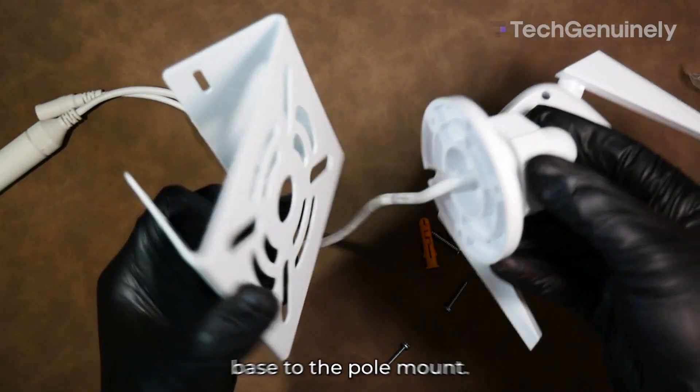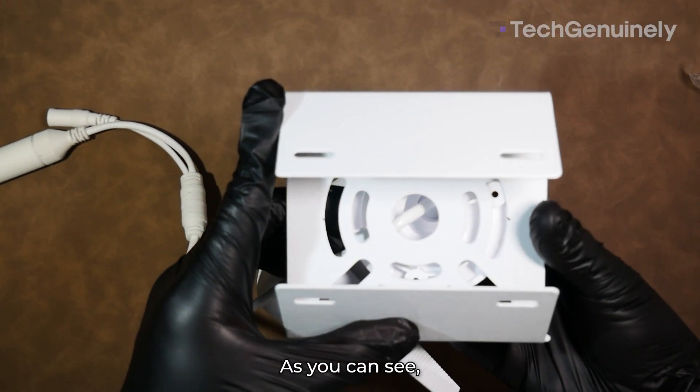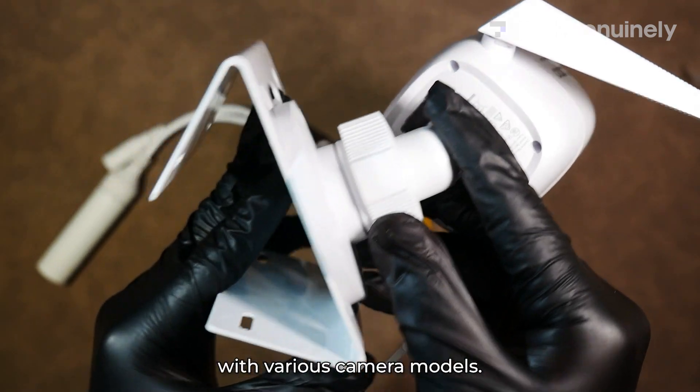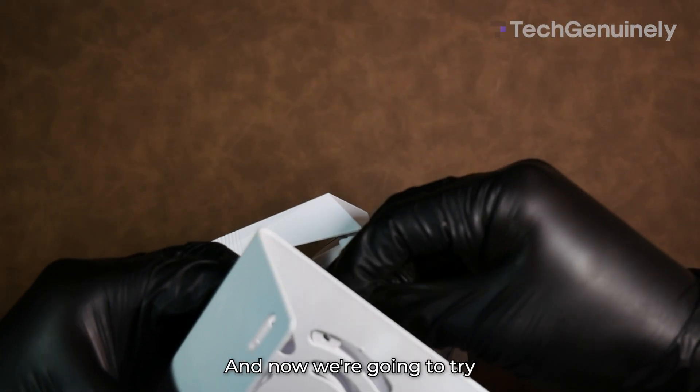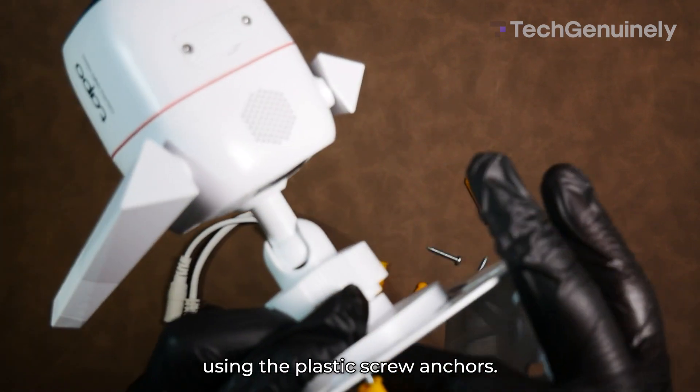And now we're going to align the camera base to the pole mount. As you can see, there are a lot of holes which allows flexibility with various camera models. As shown, the screws fit right in.